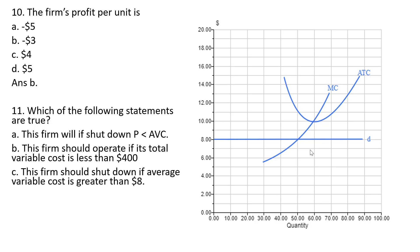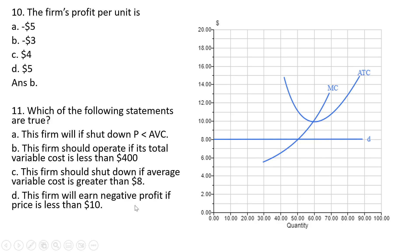Answer choice C: this firm should shut down if average variable cost is greater than $8—correct, since $8 is the price. Answer choice D: this firm will earn negative profit if price is less than $10. At a price of $10, the firm produces 60 units where price equals marginal cost, and average total cost also equals $10, giving zero economic profit. Any price below that minimum point causes an economic loss. All answers are correct for question 11.